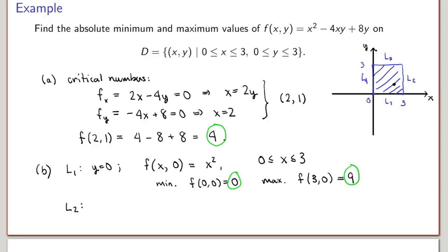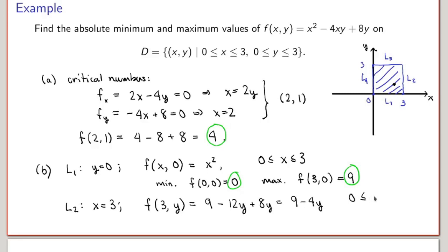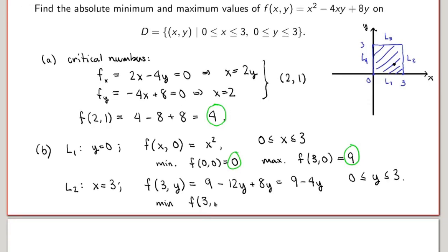Continuing with L2 (x = 3): keeping track, the minimum is −3 and the maximum is 9 on this segment.